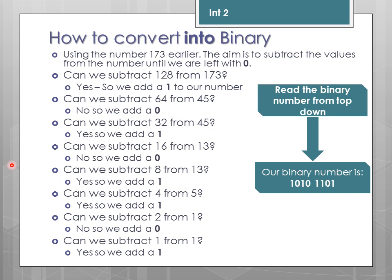We repeat this until we are left with a remainder of 1. Taking that away leaves us with 0, and our binary digits from top to bottom are: 1, 0, 1, 0, 1, 1, 0, 1. You'll notice that we usually write them in groups of 4 bits. A group of 4 bits is known as a nibble.